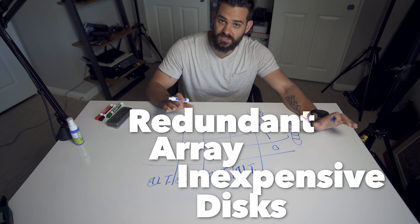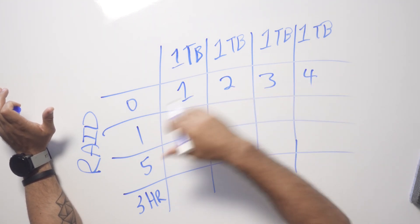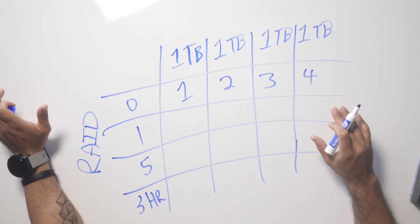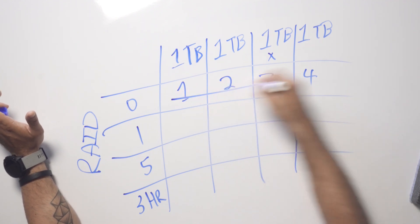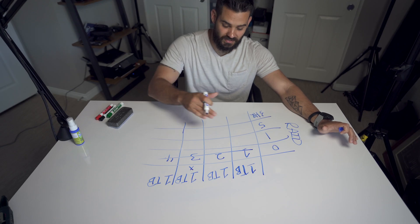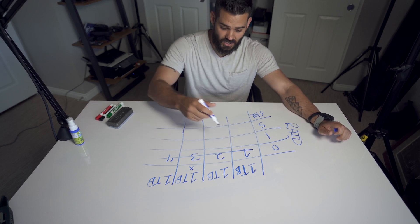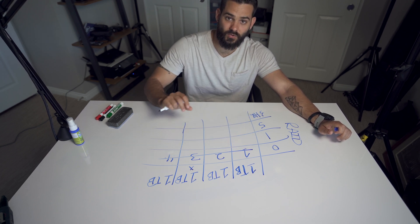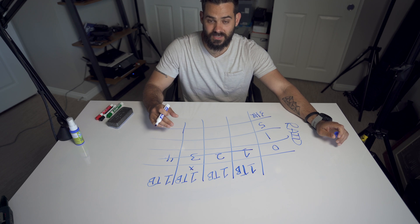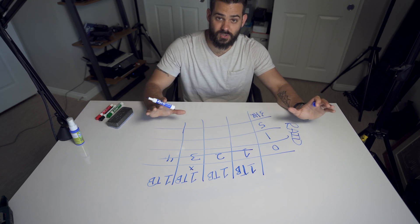With RAID 0, this is really going to give you a performance boost. However, if any of these fail, you're going to lose the entire array. So in this example with four one-terabyte discs, I get four usable terabytes. But if the third drive here fails, the entire array is gone and I could lose all my data unless I'm able to recover that specific disc. What it does is spread the data across all four discs so you can aggregate the read and write speeds. You also get one logical volume, so it looks like one disc rather than managing four separate drives.